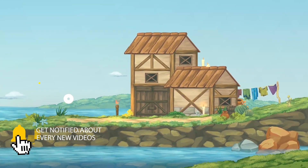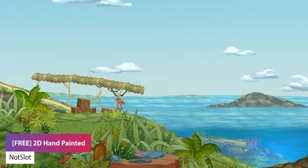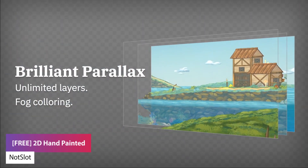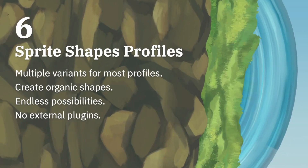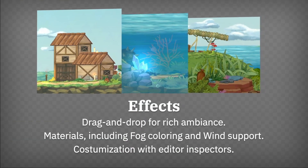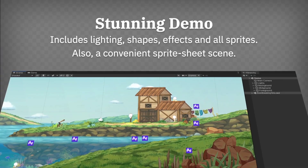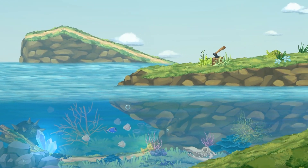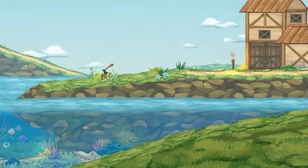Number one is the free 2D hand painted. This is a selection of 2D hand painted assets up to 4K resolution for platformers, shooters, side scrollers, and so much more. The package contains 80 sprites, four drawable sprite shapes, ambient effects, a playable demo, and lots of neatly designed drag and drop things, all with PSD files. This is only suitable for the universal render pipeline with the 2D renderer.